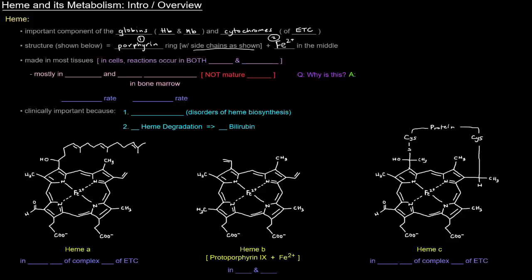So in the center here we have heme b, which is protoporphyrin IX and iron 2+. Protoporphyrin IX is a specific porphyrin. Heme b is what we typically think about when we think about heme, and that's because that's the heme that's in hemoglobin and in myoglobin.